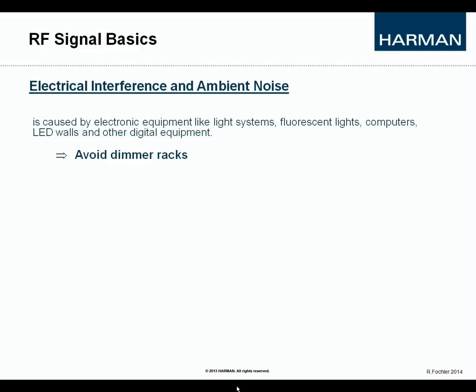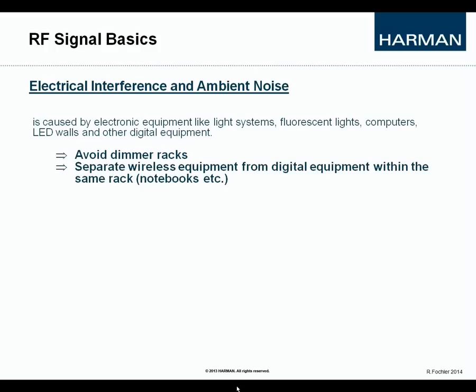These effects can range from a simple degradation of data to a total loss of data. So, avoid dimmer racks. Separate wireless equipment always from digital equipment, especially within the same rack. Don't place any tablets or notebooks on top of the racks that hold wireless equipment. Ambient radio noise refers to radio waves that, after many reflections, become weaker and essentially non-directional, turning into general radio energy across a wide range of frequencies, detected by your receiver as a continuous incoming low-level radio signal.